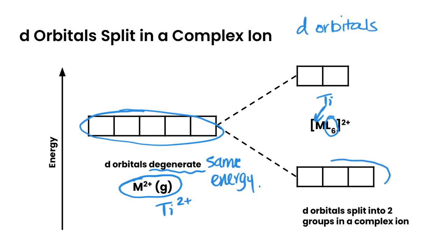And they actually split into two groups. Therefore, for the octahedral shape, three of the orbitals are lower energy and then two of the orbitals are higher energy. So you end up getting a splitting pattern for the d orbitals themselves.